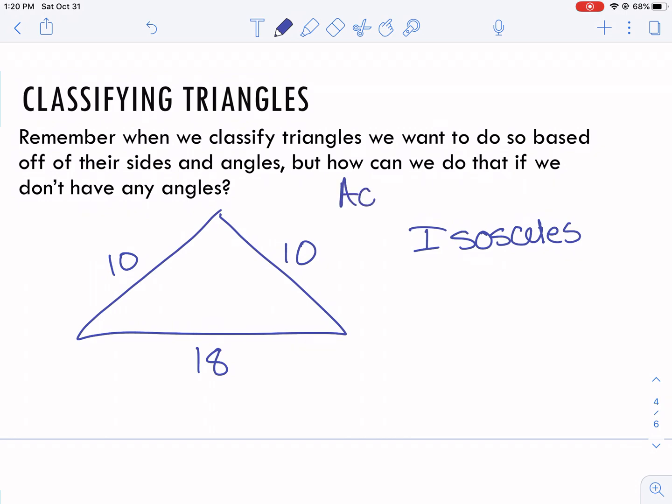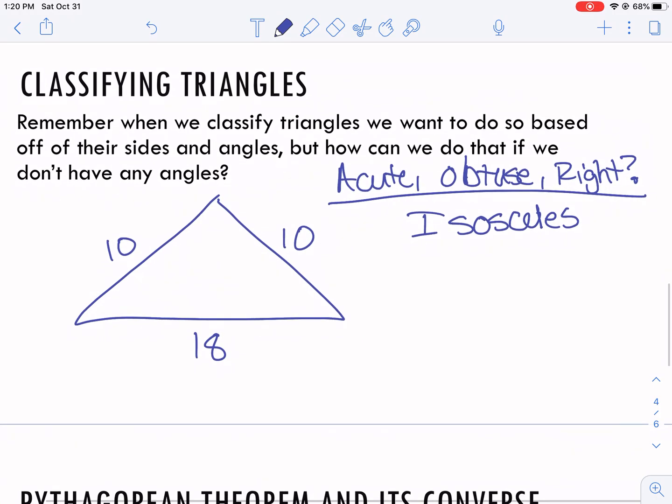But then I want to determine is it acute, obtuse, or right. That was the classifying angles piece. We did that by looking at the angles in the triangle. But here, unfortunately, I don't have any of the angles.